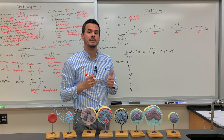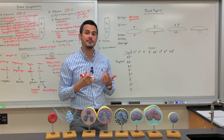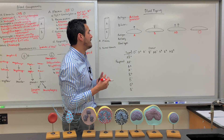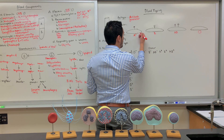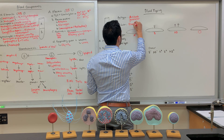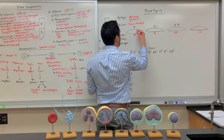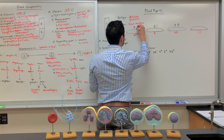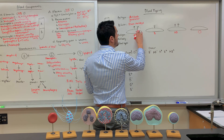What that positive indicates is that RH factor is present. RH stands for rhesus — they discovered this in rhesus monkeys. If someone has the RH factor, we say that they are A positive. If they do not have the RH factor, that means that they are A negative.